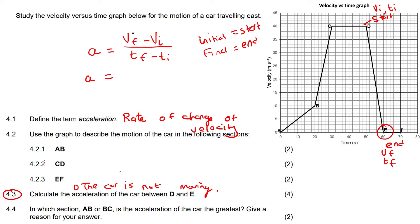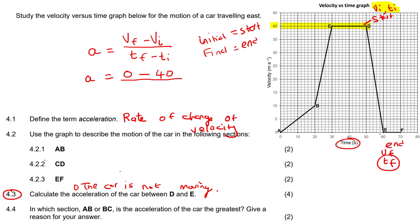Using the formula: the final velocity is read from point E on the y-axis, which is zero. Then minus the initial velocity, read from point D on the y-axis, which is 40. For the final time, we go to point E on the x-axis, which gives 60. For the initial time, we go down to the x-axis from point D, which gives 50. Working this out, you should get negative 4 meters per second squared.